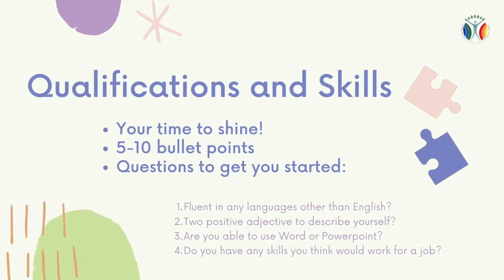Underneath your name and contact information, there should always be a section that summarizes your qualifications and skills. This section is your chance to talk about what makes you special and what sort of skills you possess. Like all sections of your resume, this section should be in bullet point format. You can place anywhere between 5 to 10 bullet points talking about your different skills and qualifications.